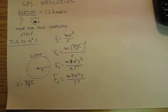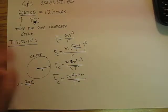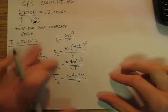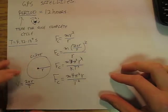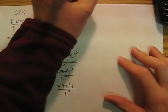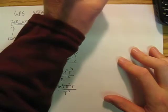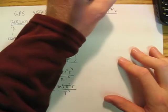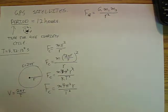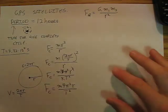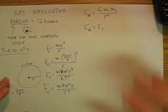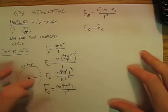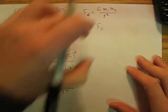Now, what's causing that centripetal force? Centripetal force is not a force all on its own — there's got to be a real force providing it. What causes a satellite to go around the earth? What causes it to be attracted to the earth is gravity. We just learned that the gravitational force is G·m₁·m₂ / r². So force gravity is what is causing the centripetal force for a satellite going around the earth.